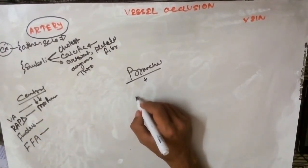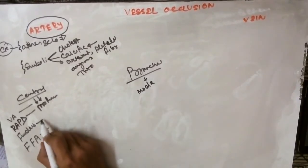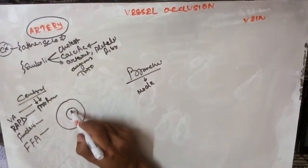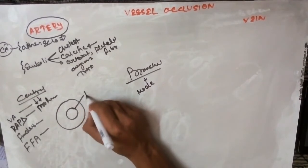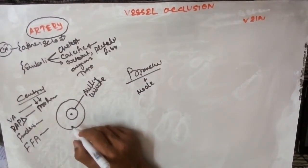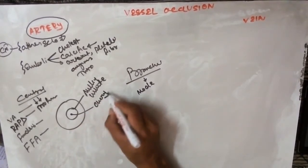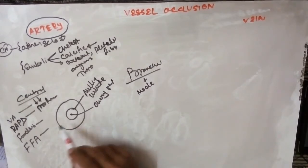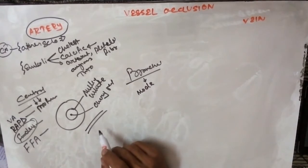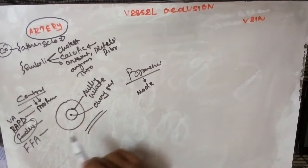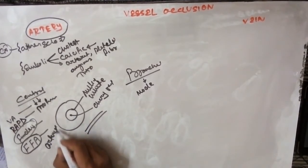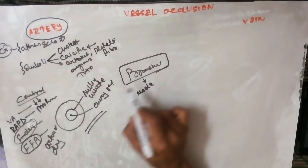In branched occlusion, RAPD may or may not be seen — only a moderate type is present. On fundus examination, due to occlusion in the artery, you will see a milky white spot on the retina with a cherry red spot in the center. Fundoscopy also shows attenuation of the arterial wall along with venous narrowing. FFA shows that arterial filling is delayed.